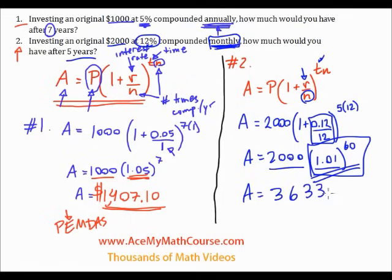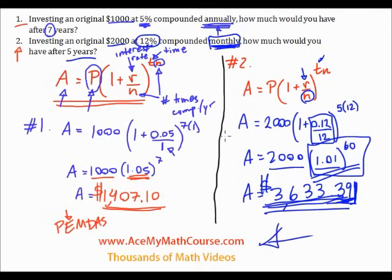3,633 dollars and 39 cents. So that's it. Investing two thousand dollars at twelve percent compounded monthly for five years, this is what we get. So hopefully that makes great sense to you. Check out some more videos right here. Good luck!